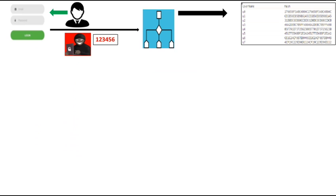The hacker may select a random or expected password value and then apply the same hashing algorithm to convert this guessed password into its hash value. He then compares this hash value with the hash values found in the password file.